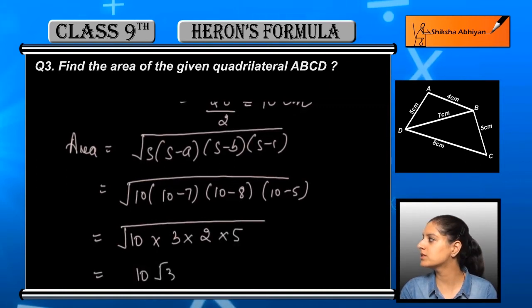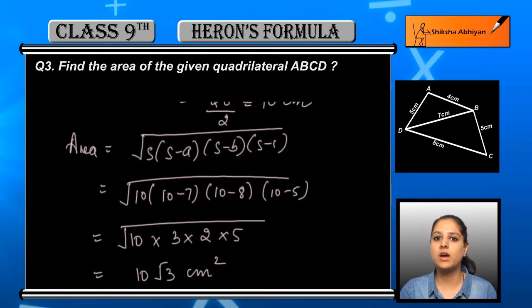After taking the square root, we get 10 root 3 centimeter square as the area of this triangle.